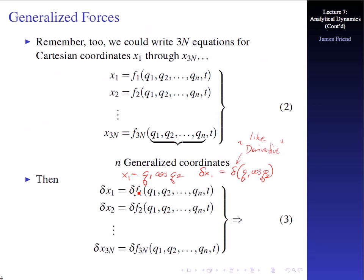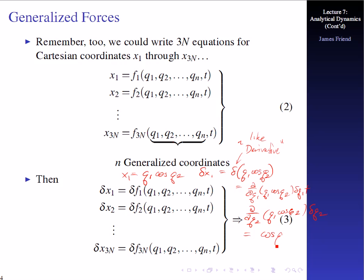Looking at our specific example where x1 equals q1 cosine q2, then delta x1 equals the partial with respect to q1 of q1 cosine q2 times delta q1, plus the partial with respect to q2 of q1 cosine q2 times delta q2. Working that out, this would be cosine q2 times delta q1, plus q1 times minus sine q2 times delta q2. And that would be our specific example for this.